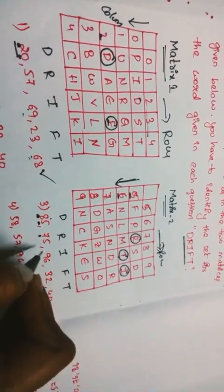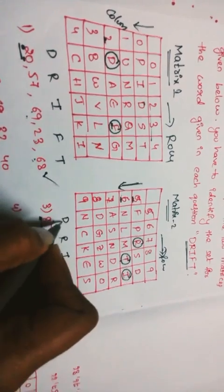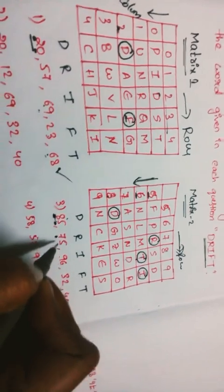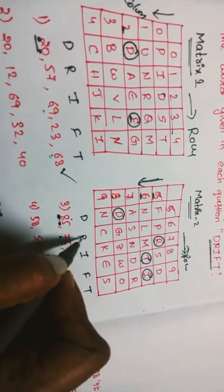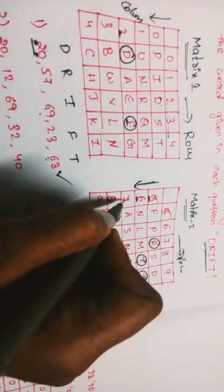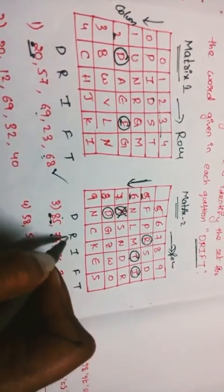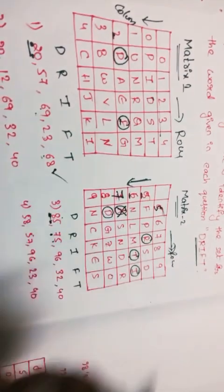The most important rule: the first number in each pair represents the column, and the second number represents the row. So for 8,5: column 8, row 5 — D is satisfied. For 7,5: R is satisfied.